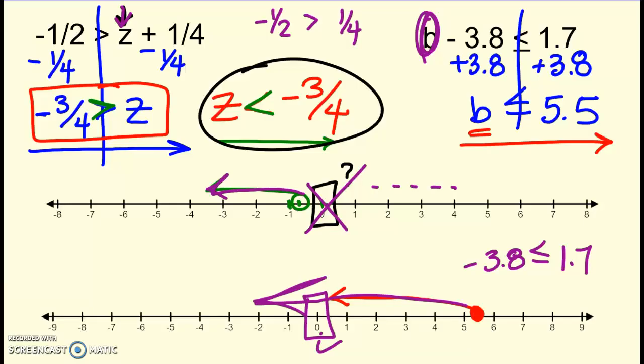So if you get confused, take an easy point to plug in, test that, and it'll tell you if your arrow should go that way or not. Okay, so that's the end of my notes for 4.2.